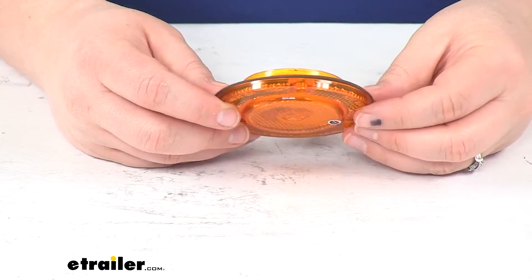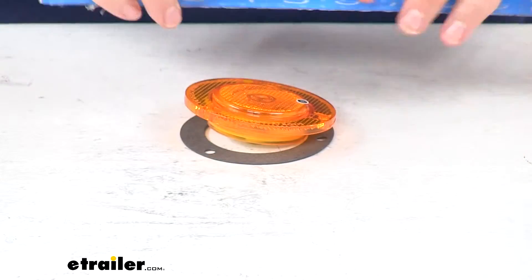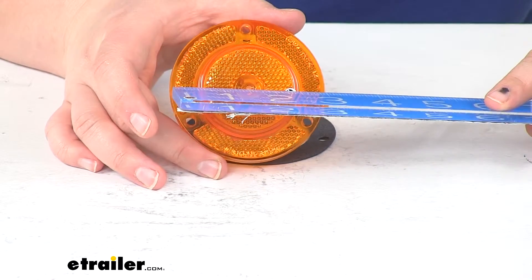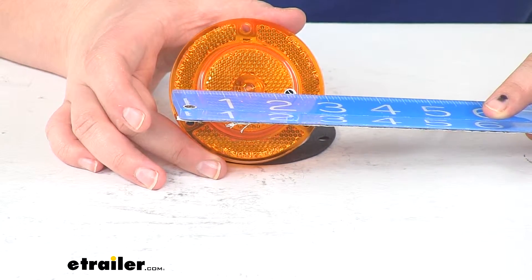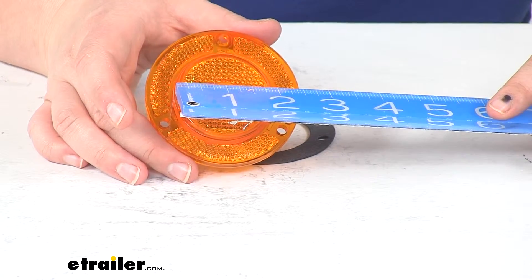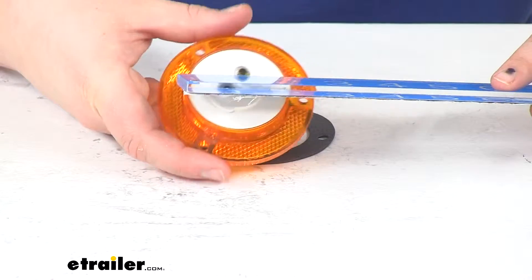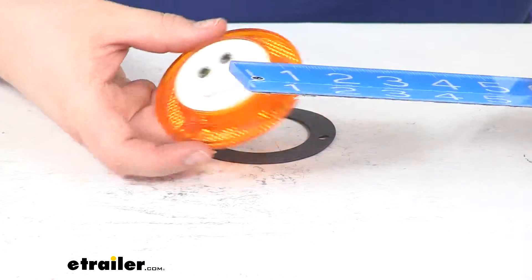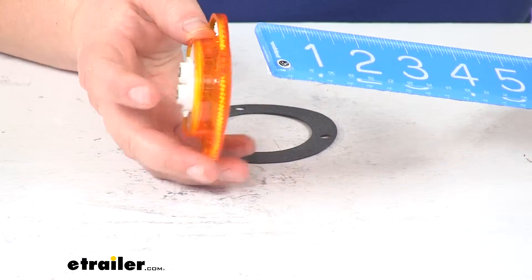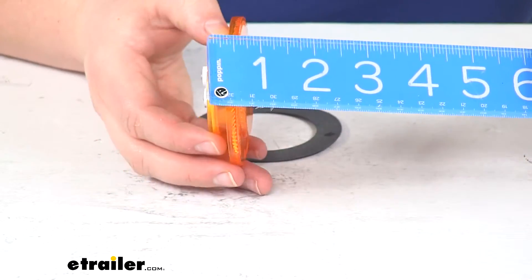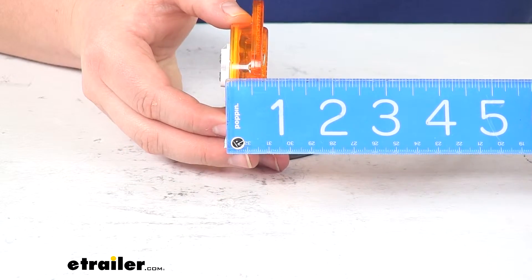As far as measurements, overall our light with the reflector is about three inches in diameter. The light itself is just about two inches in diameter. And then the thickness going from the front face of the light to the back of the terminals is about seven-eighths of an inch deep.